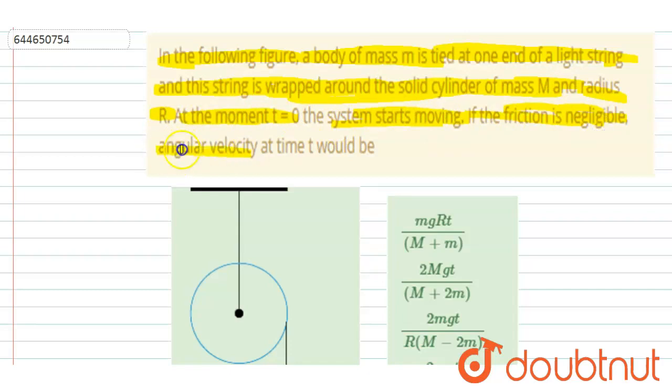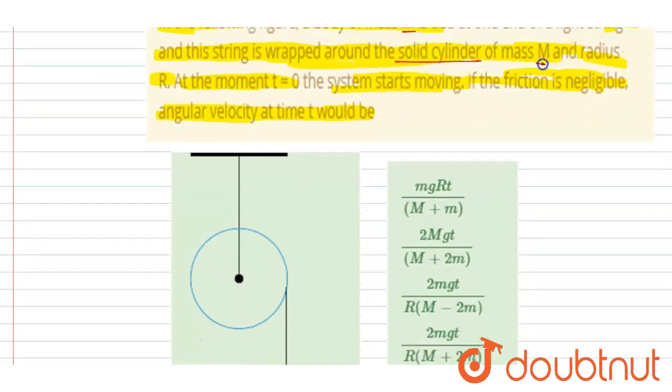And the friction is negligible. You have to calculate the angular velocity at time t. So if you see here, the block mass is given. And it is tied with a string which is wrapped around a solid cylinder. And mass of the cylinder and the radius of the cylinder is also given.